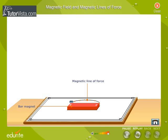Similarly, place the compass at different points near the north pole of the magnet and map the lines of force.